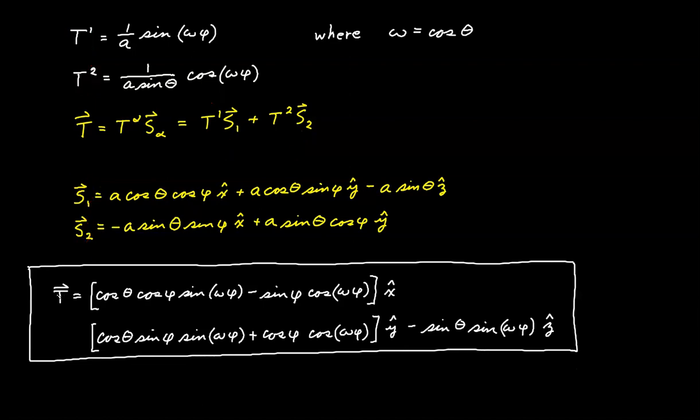Notice that our vector T is a function of phi. Phi is the only variable in this expression. Everything else is a constant. Remember, theta is a constant here and omega right here is simply the cosine of theta. There are a couple of things you can do to give yourself a sanity check here. Let's set the value of phi equal to zero. And if we do that, then this term is zero, this is zero, this one is zero.